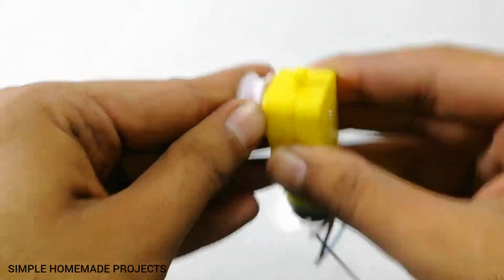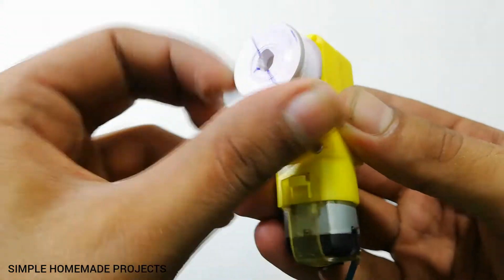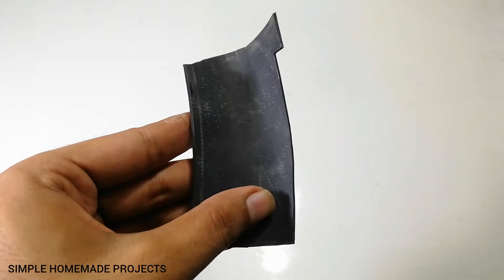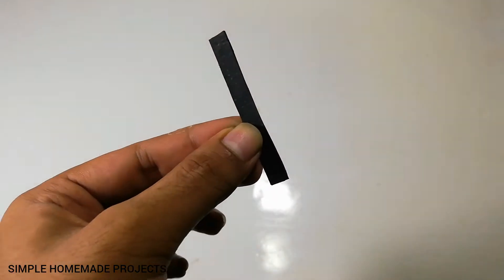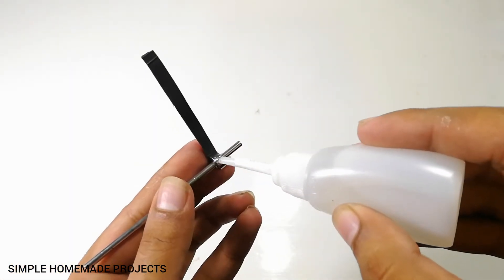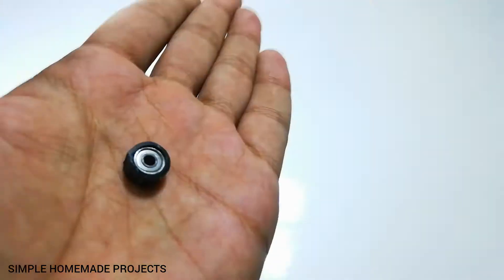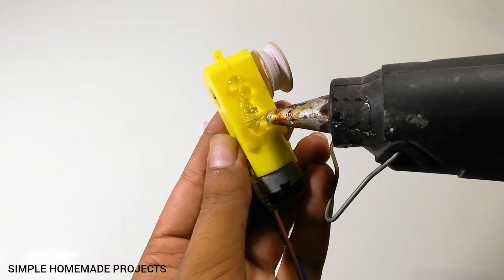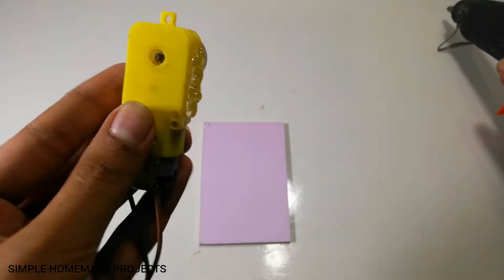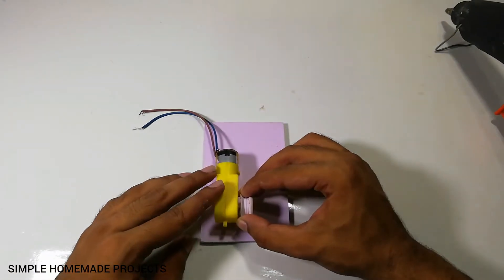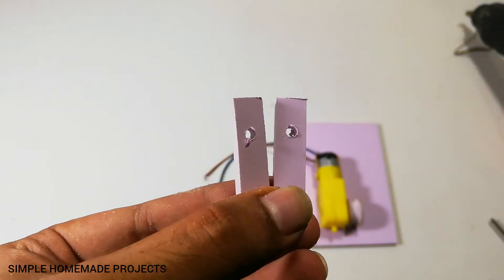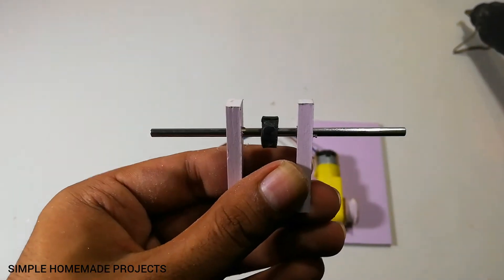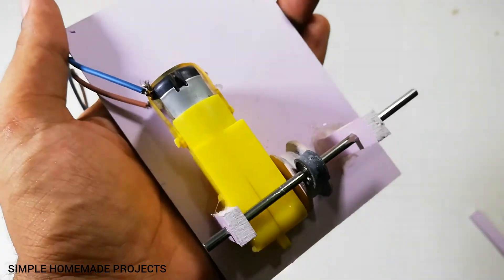Now fix it on the motor shaft. Cut a rubber strip from an old tire tube and fix it on the bearing using super glue. Fix the motor on the base plate using some hot glue. Now cut two PVC board strips and drill holes in them. Insert bearing on the shaft and pass it through the holes of the strips, and glue the strips on the base plate as shown.